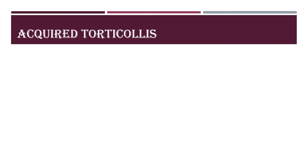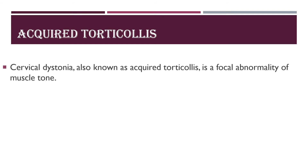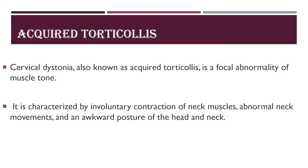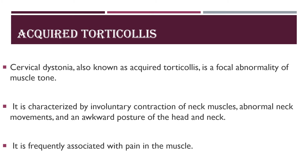Now coming to acquired torticollis. Cervical dystonia is another name for acquired torticollis, and this condition is frequently associated with pain. Cervical dystonia is a focal abnormality of muscle tone, characterized by involuntary contraction of the neck muscles, abnormal neck movements, and an awkward posture of the head and neck. It is frequently associated with pain in the muscle.